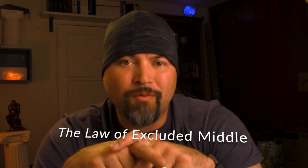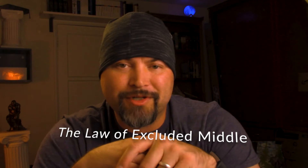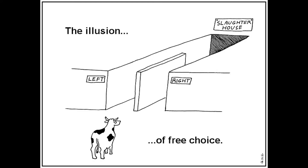Number two: the law of excluded middle. One or the other — no third option. For example, a statement is either true or false. Something either is or it is not. Don't confuse the law of the excluded middle with a logical fallacy called the false dilemma or false dichotomy. A false dichotomy abuses logic by offering two options as an either-or proposition when there is a possible third option or more.